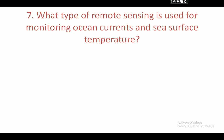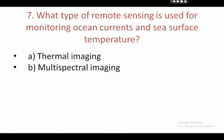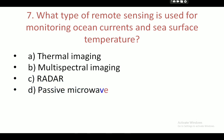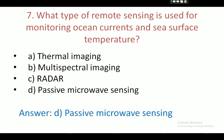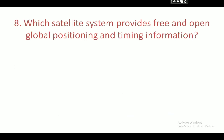Next question: what type of remote sensing is used for monitoring ocean currents and sea surface temperature? Your options are: thermal imaging, multispectral imaging, radar, and passive microwave sensing. Your correct answer is D — passive microwave sensing.